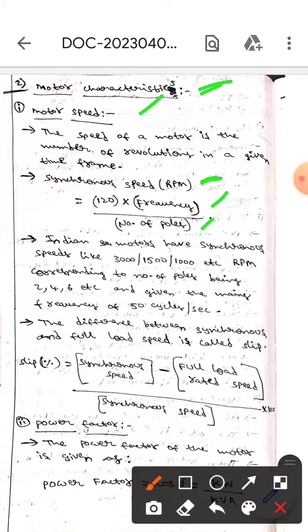Indian motors have synchronous speeds like 3000 RPM or 1500 RPM, 1000 RPM, etc., whereas the corresponding number of poles are like two, four, six, etc., and the given main frequency is 50 cycles per second.